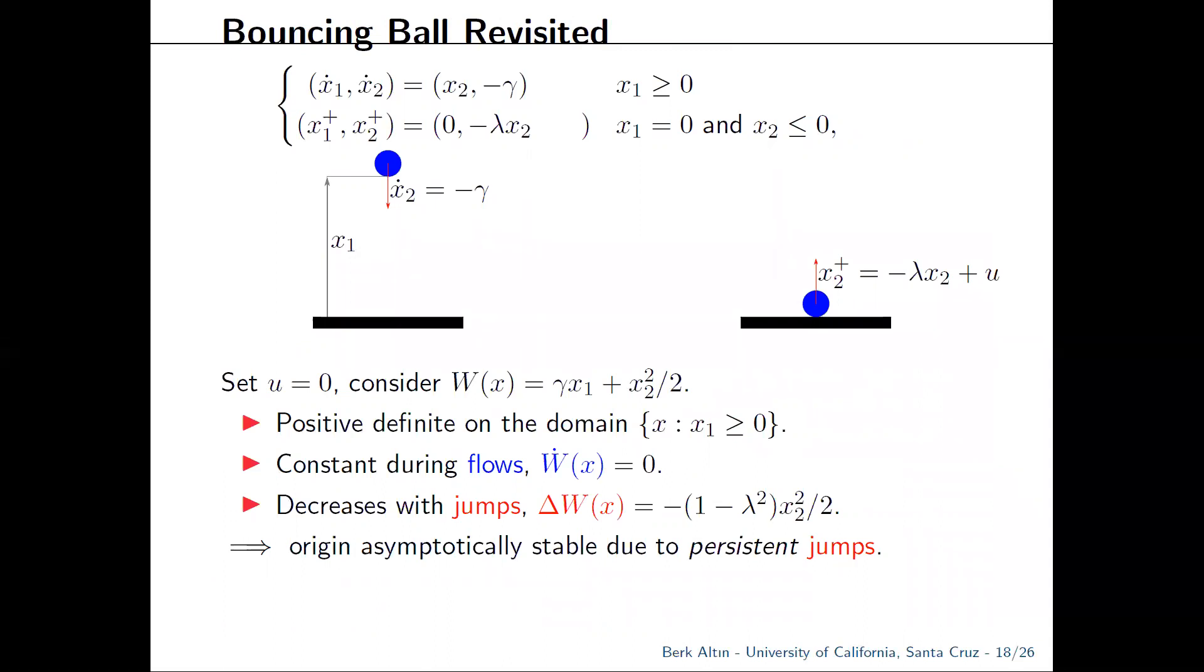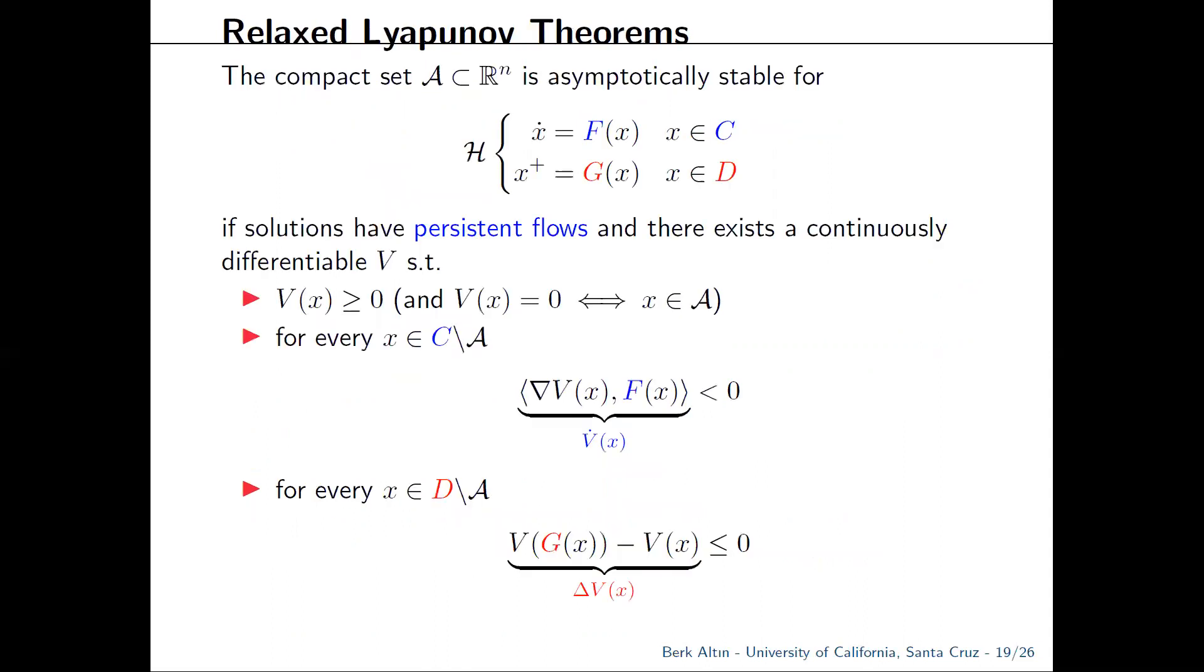The main idea is as follows. Basically, for the non-actuated case, you can verify stability of the origin using persistence of jumps. To do that, again, use the energy function, which is constant during flows due to conservation of energy, but decreases with each jump when lambda is less than one. So as the number of jumps go to infinity, the energy tends to zero. And there you have it. A quite natural and intuitive way of checking stability. This is actually not specific to the bouncing ball.